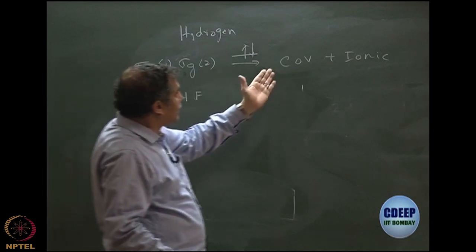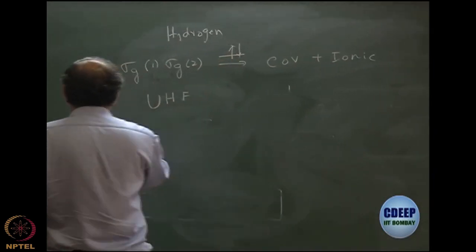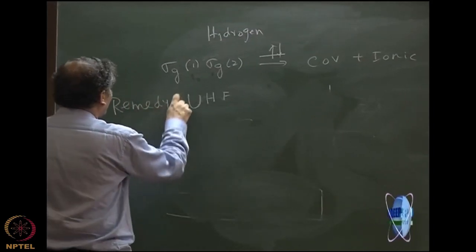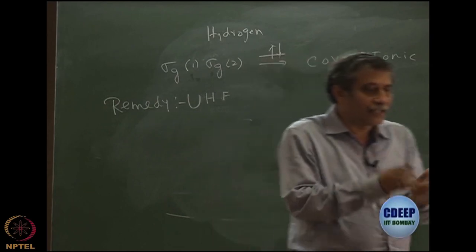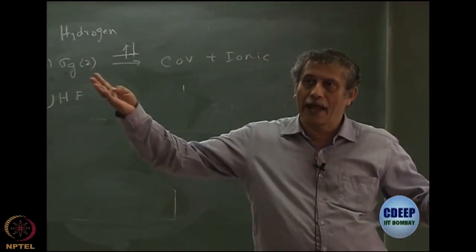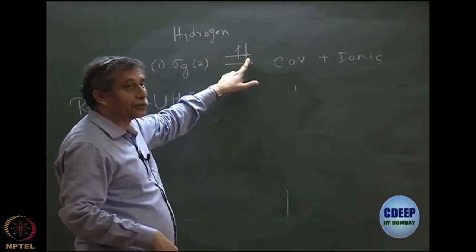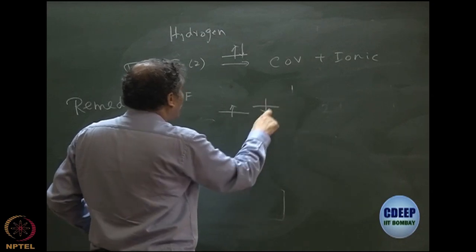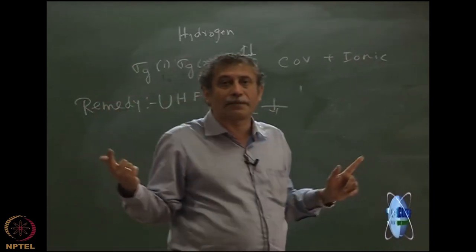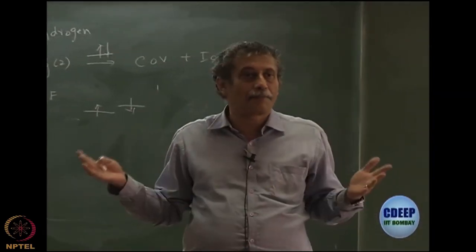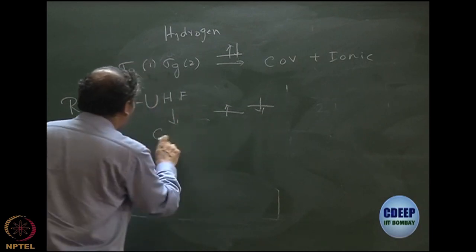Another way to look at it is that covalent character is lost because there is too much ionic character. One remedy is to use UHF, because UHF removes this spin pairing — the electrons are in different orbitals with opposite spins. Because of the Pauli exclusion principle in RHF, if one spin is up the other must be down. But in UHF, when the molecule dissociates the electron can flip, because they are not constrained by Pauli exclusion since they are in different orbitals. UHF gives more or less correct dissociation results.